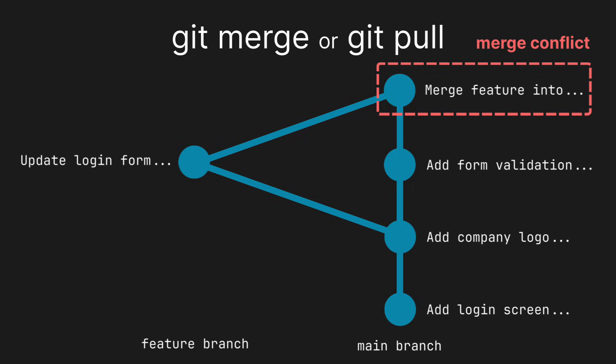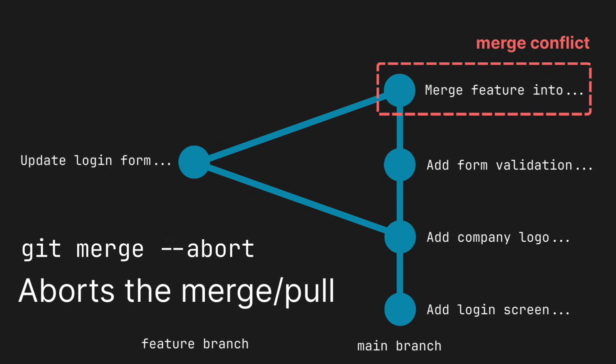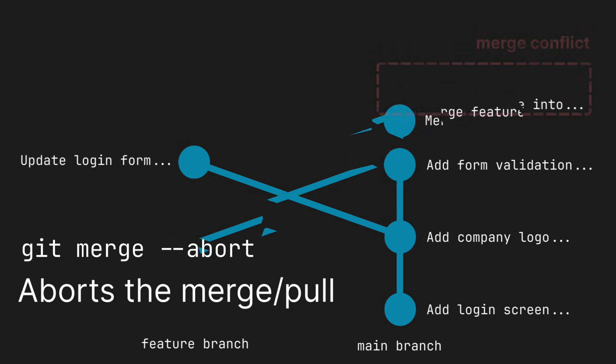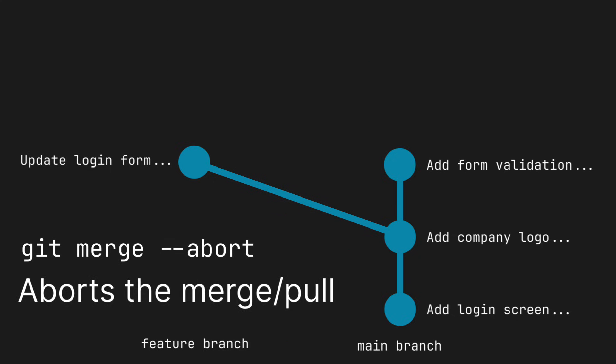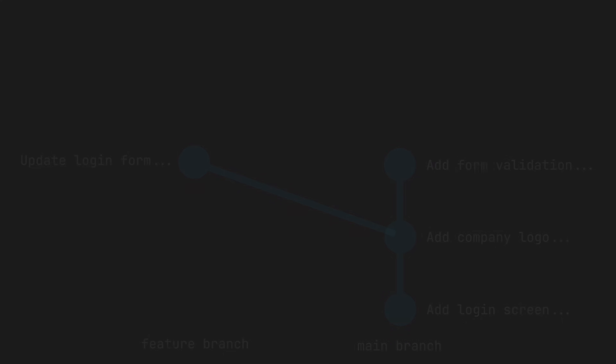First of all, if you don't have time right now to deal with the conflict and you just want to abort the merge, just run git merge --abort, which will reset everything to the same state it was before. Once you have more time and are ready to handle the conflict, you can just pull or merge again.